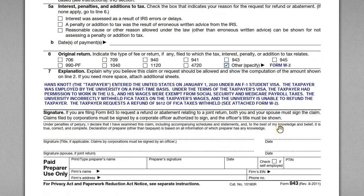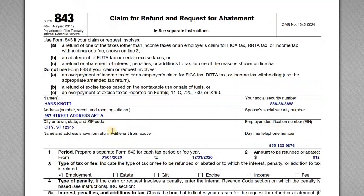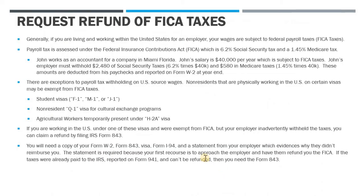You need to attach a lot of documentation: a copy of the W-2, a copy of your visa, and your I-94. You also need to get the employer to confirm they did withhold the taxes but can't refund you. If you can't get that letter, you'll need to write a narrative explaining what steps you took to reach out to the employer first to try to get a refund, and that they weren't able to help or didn't respond. The IRS needs to know you went down that pathway first before reaching out to them via the Form 843.